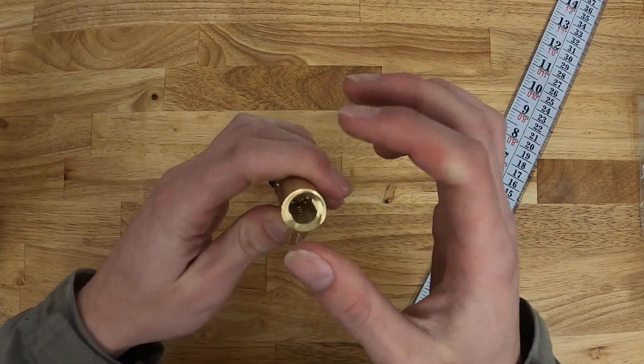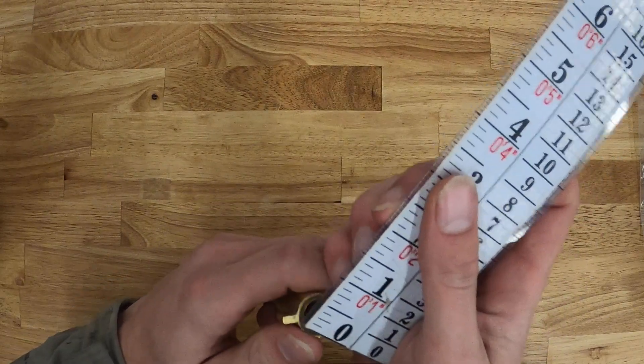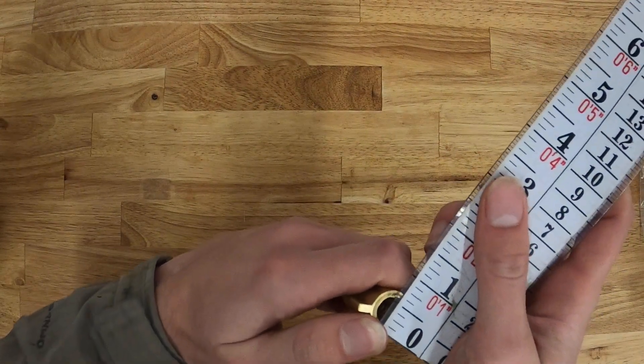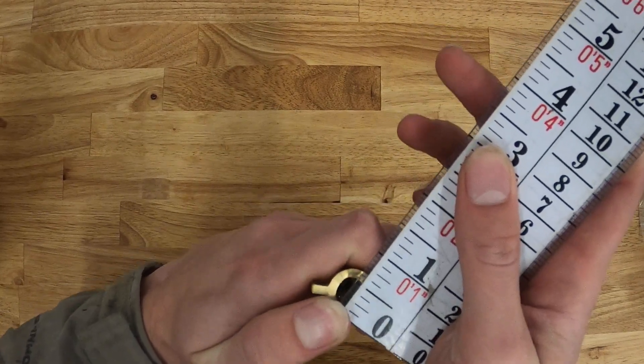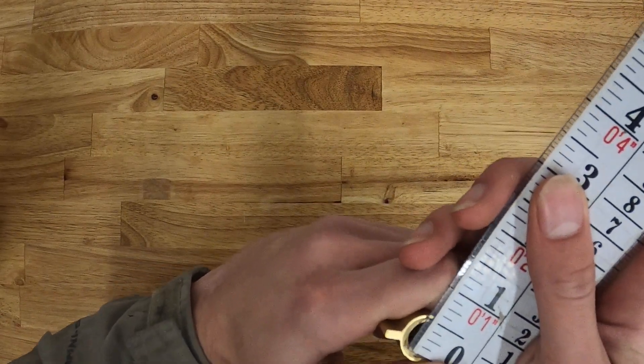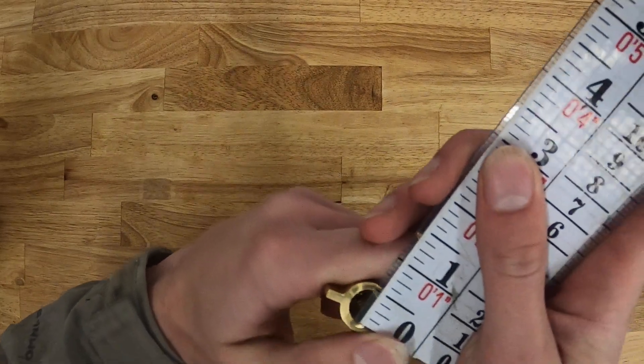And we'll get an outer and an inner diameter here at those female threads. That's right about three-quarters of an inch, and then with an inside diameter of right about half an inch.